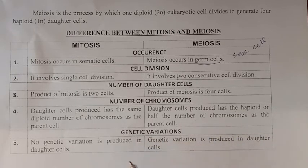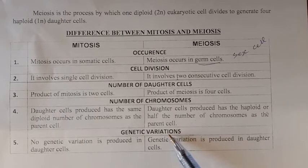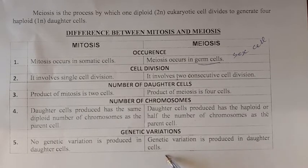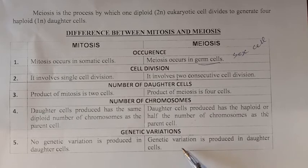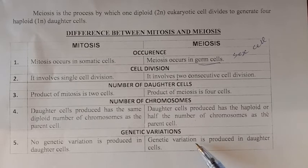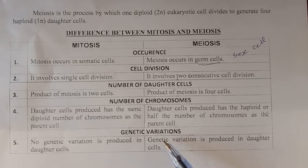Regarding genetic variation: in mitosis, no genetic variation is produced in the daughter cells — the gene composition on the chromosomes remains unchanged. In meiosis, genetic variation is produced in the daughter cells because during one phase of meiosis 1, genes are exchanged between chromosomes. This exchange changes the gene composition on the chromosomes, and this change is called genetic variation.